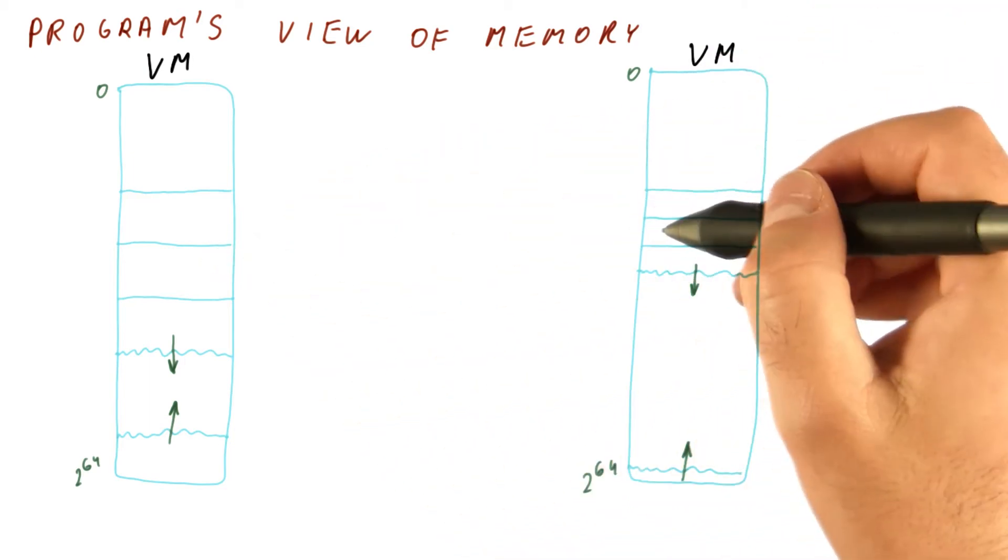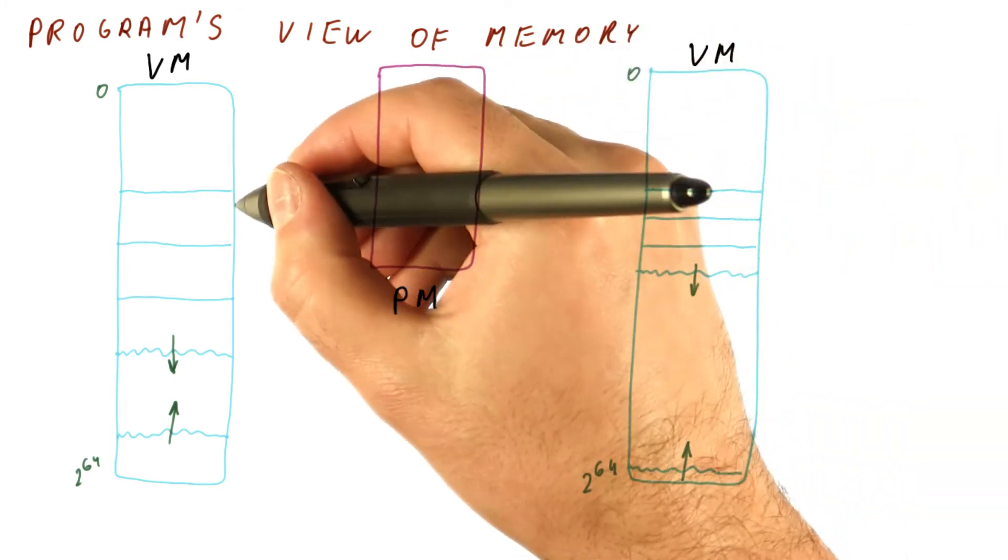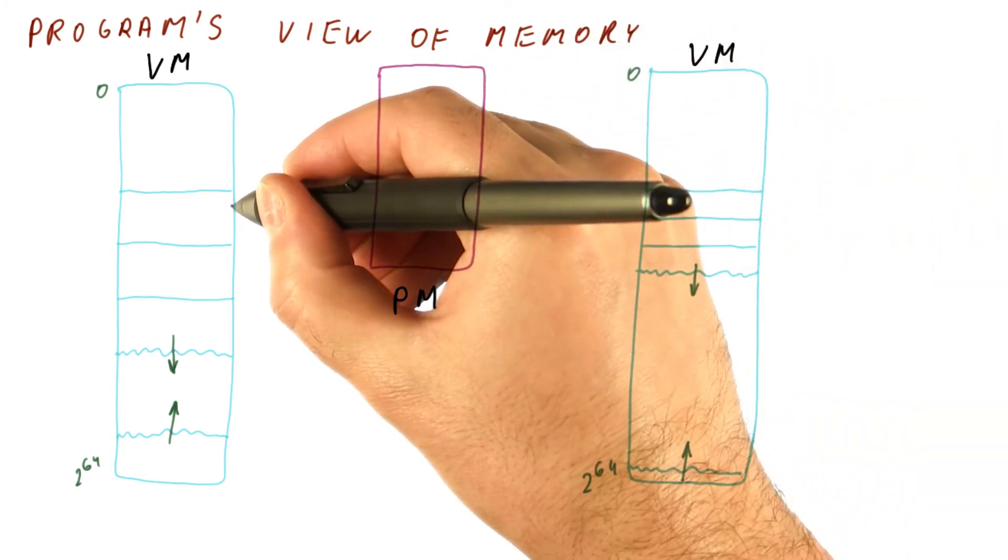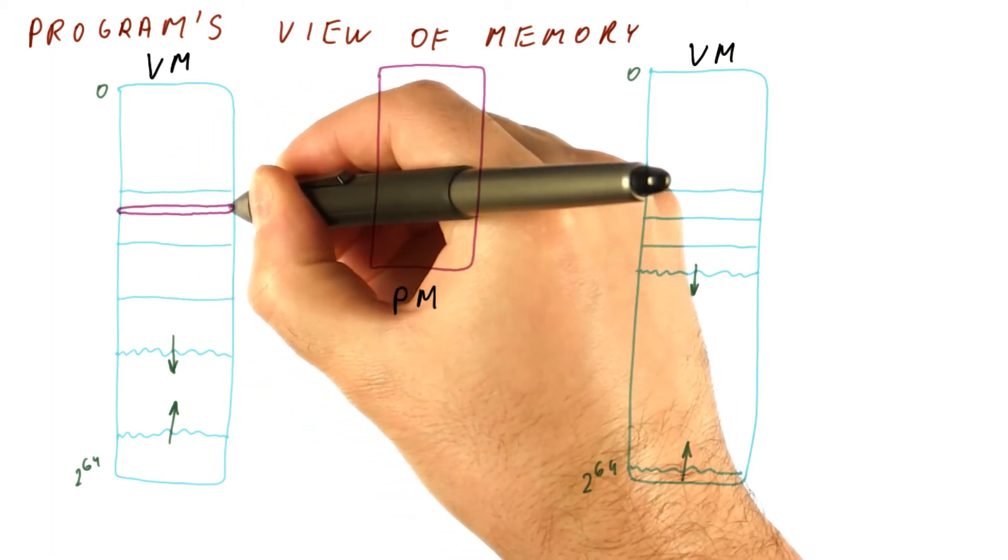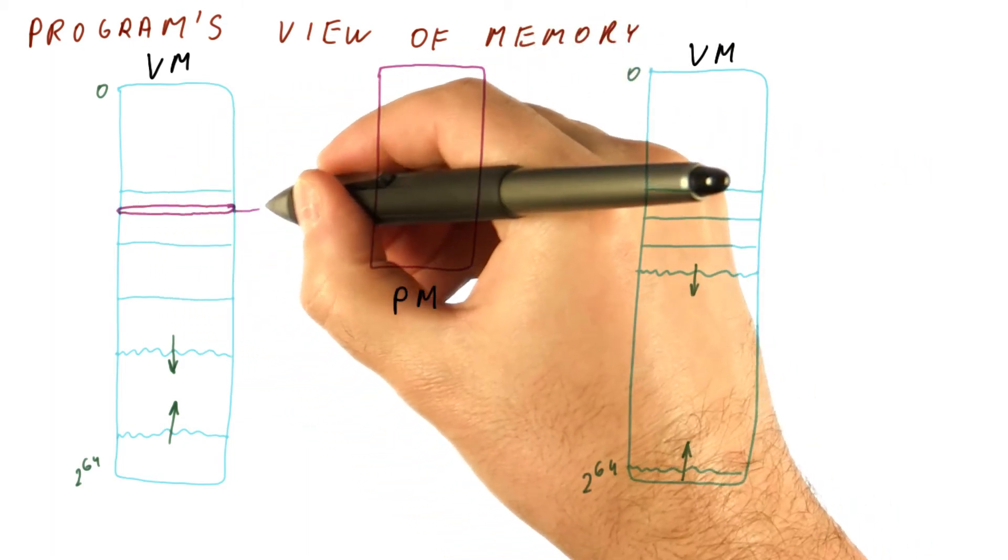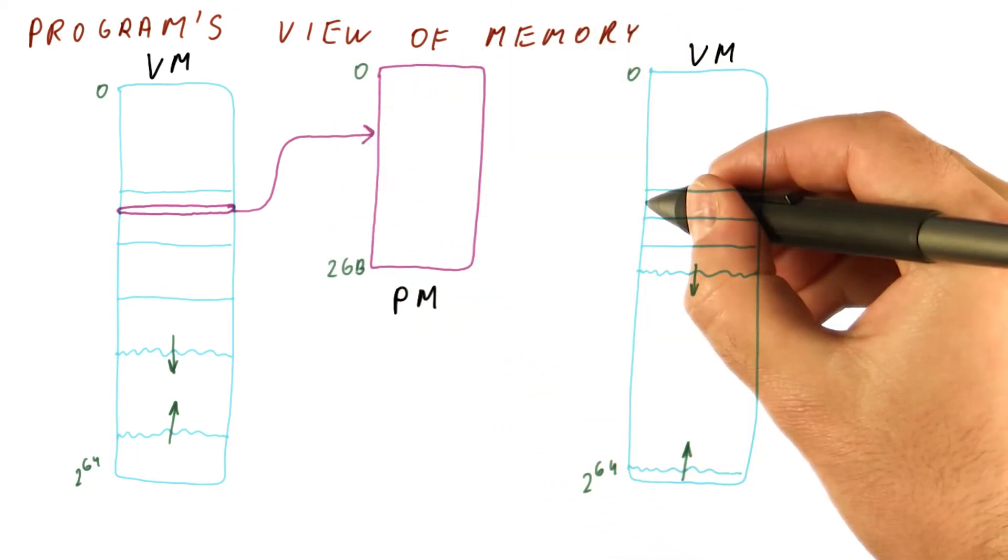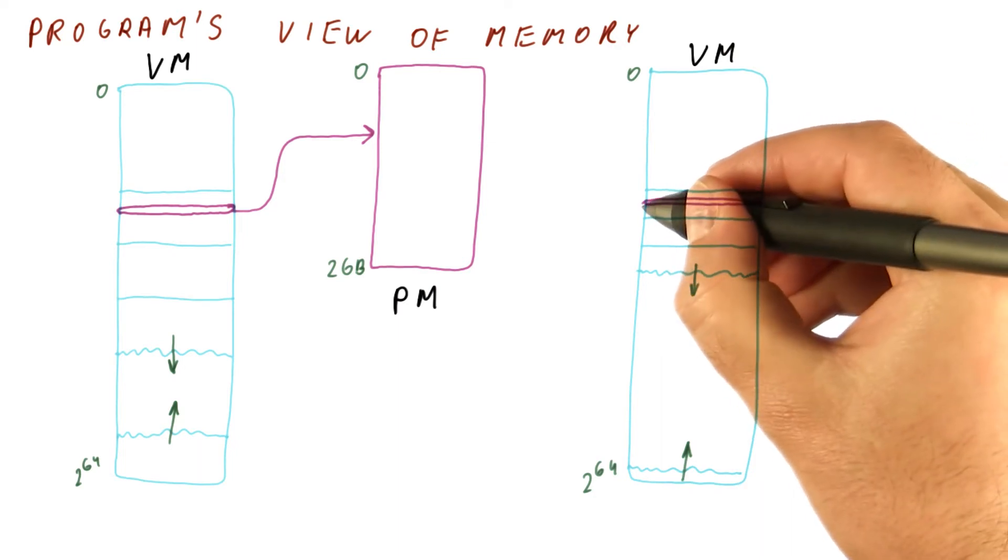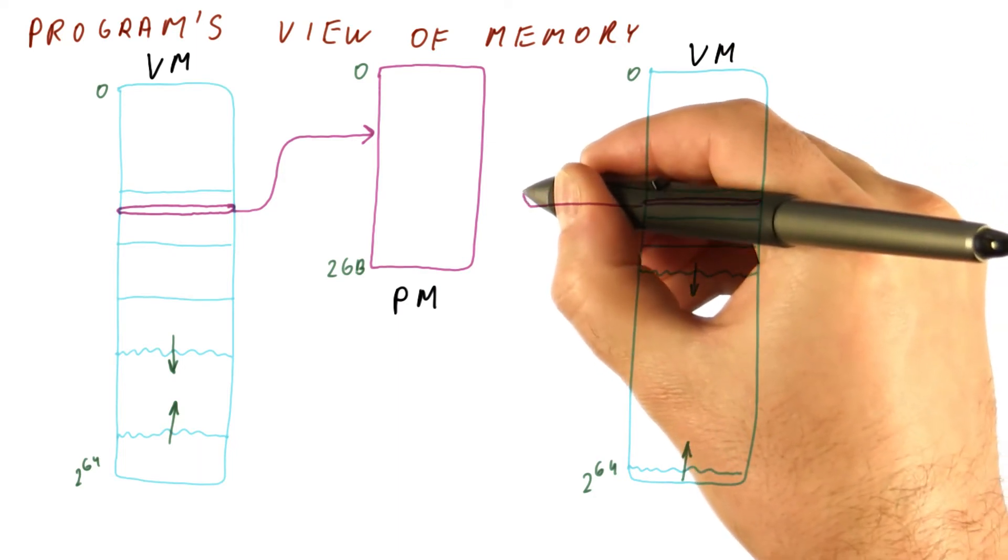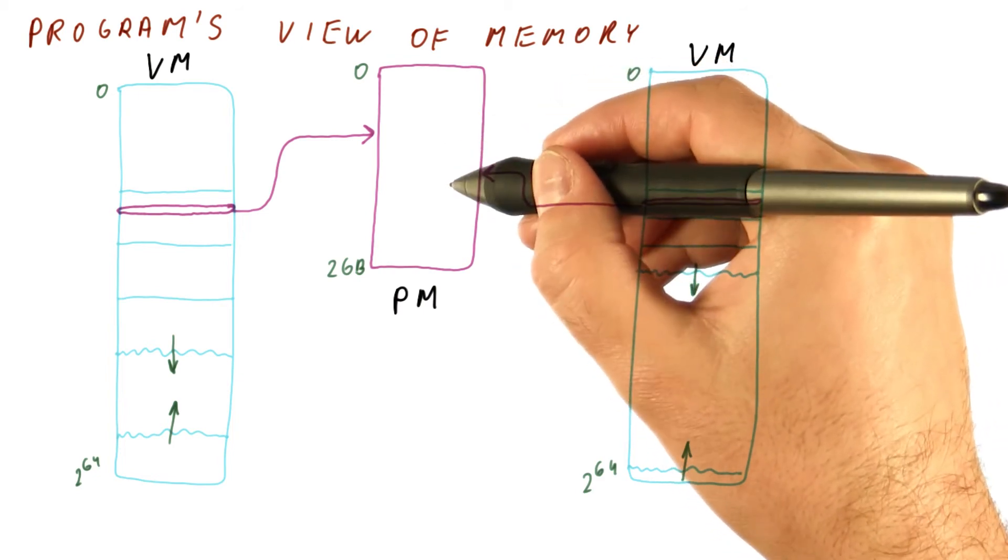They might be running at the same time. Let's say this is our physical memory. We need to figure out what happens when this program generates an address that should access this memory location. How do we find where in here do we actually go? And if this program accesses a memory location with the same address, how do we figure out where does it go? It might go to a different place in the physical memory.